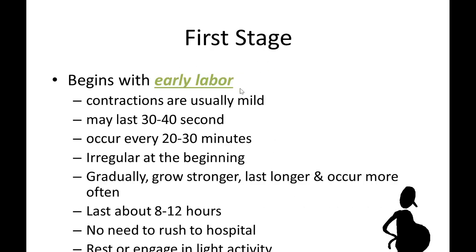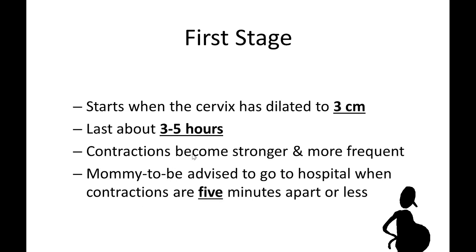The first stage is also called early labor. Contractions are mild, may last 30 to 40 seconds, and occur every 20 to 30 minutes — irregular at the beginning, but gradually grow stronger, last longer, and occur more often. Early labor lasts about 8 to 12 hours. There is no need to rush to the hospital; rest or engage in light activity.